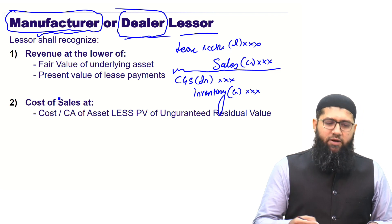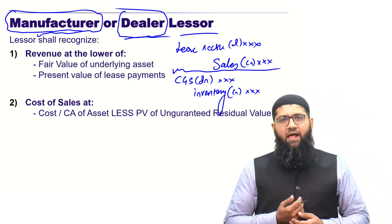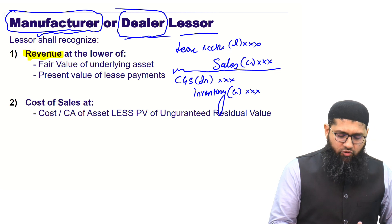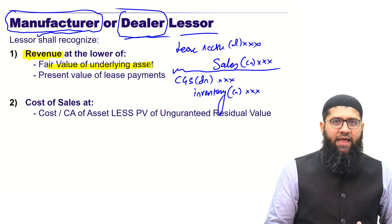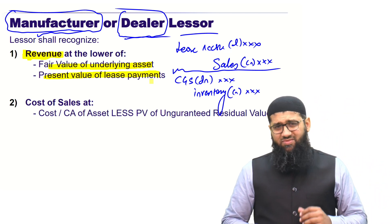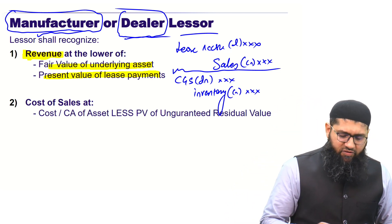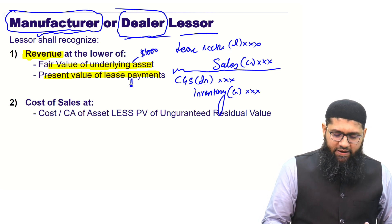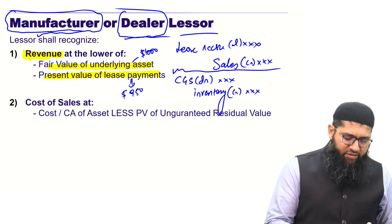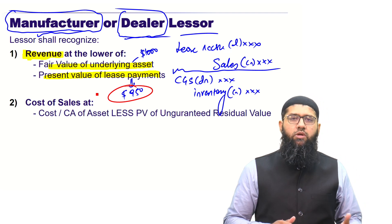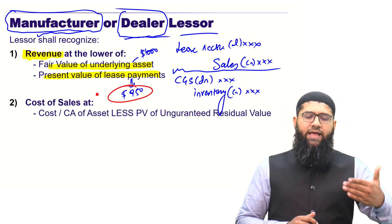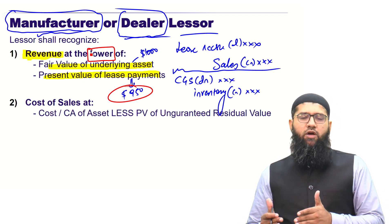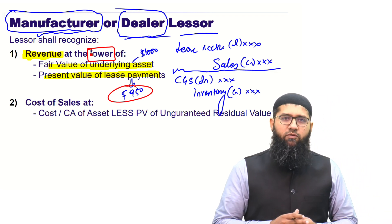As per the requirements of IFRS 16, at what amount do we recognize the lease receivable and sales, and at what price do we recognize COGS? Revenue shall be recognized at the lower of the fair value of the underlying asset or the present value of lease payments. For example, if the fair value of the underlying asset is $1,000 and the present value of lease payments is $950, you recognize revenue at $950 — the lower amount.